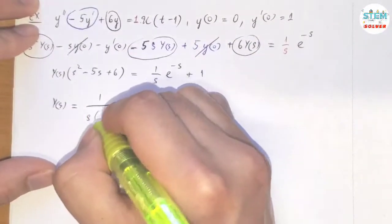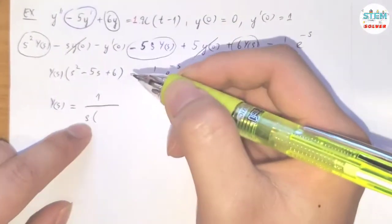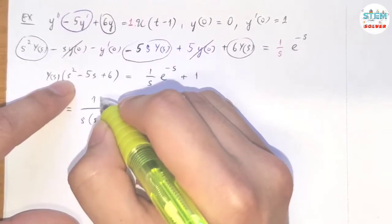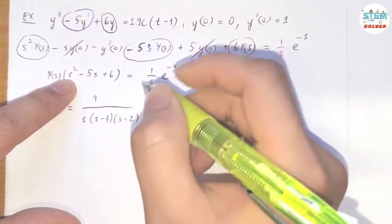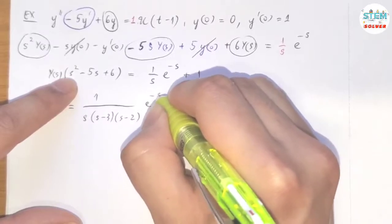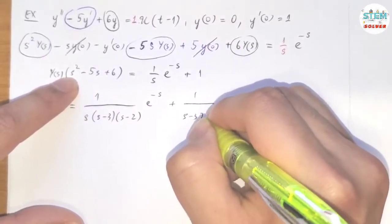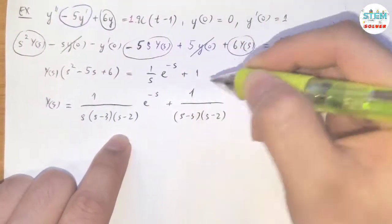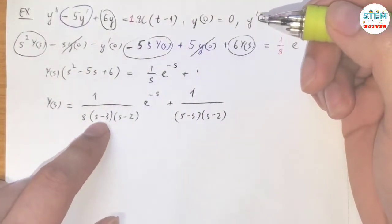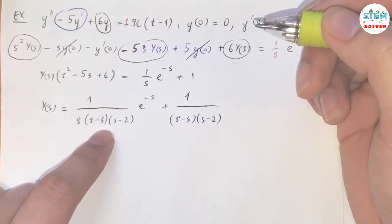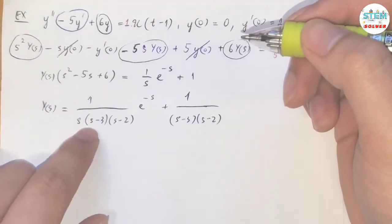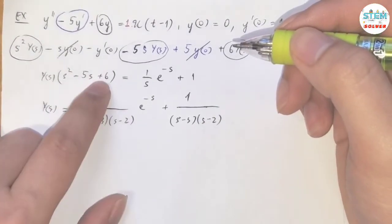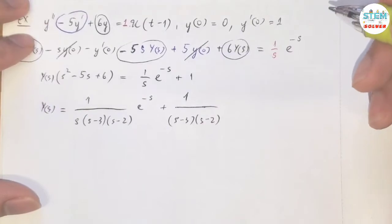Now divide both sides by s² minus 5s plus 6. So I have 1 over s, I'm going to factor this out as well, so I have s minus 3, s minus 2, and e to the negative s, plus 1 over s minus 3, s minus 2. This is just the factored form of this. When you multiply this out, you have s², negative 5s, and negative 3 times negative 2 is 6.